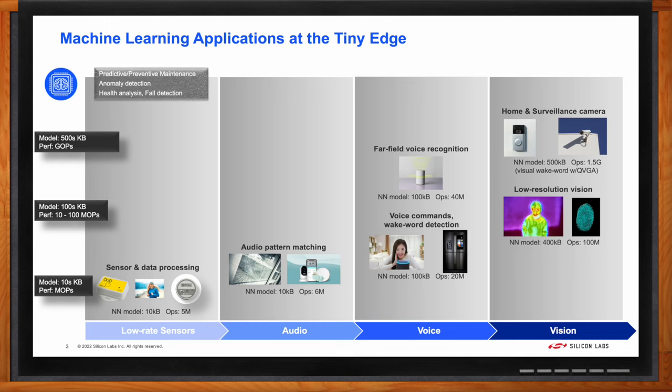On the leftmost column here are applications based on the simplest type of sensors like accelerometers, temperature, and pressure sensors. The applications can be ones like preventative maintenance, health analysis, wearables, or even fall detection.